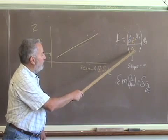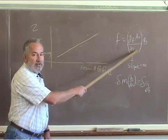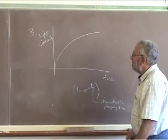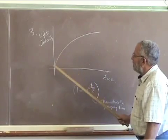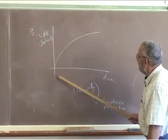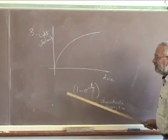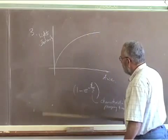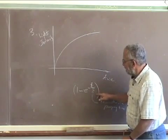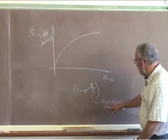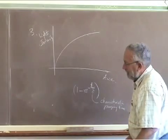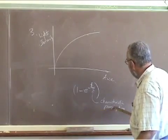Step three: your scope plot should look something like this, with light intensity on the vertical axis and time on the horizontal axis. The exponential rise should fit a curve of the form 1 minus e to the minus t over tau, where tau is your characteristic pumping time. You should be able to use your graphical analysis program to calculate tau.